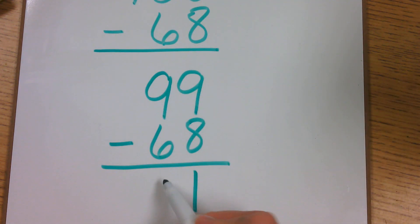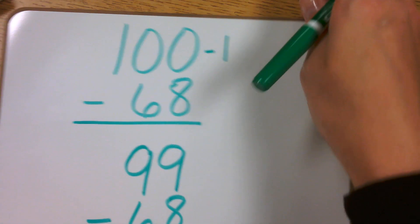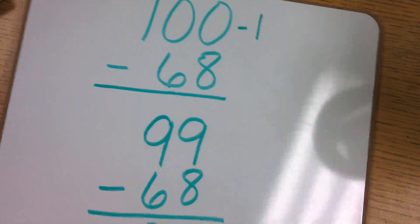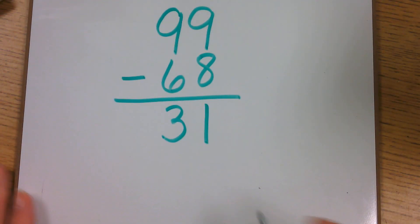9 minus 6 equals 3. Well, this isn't my complete answer yet. Since I took that 1 away from the 100, I am going to add it back to my answer or the difference.